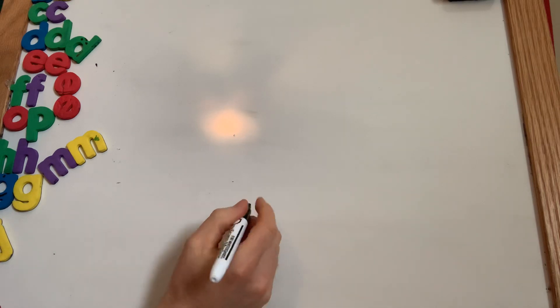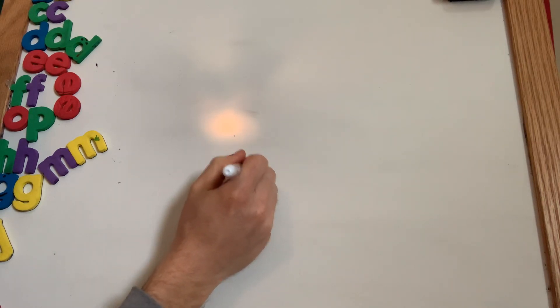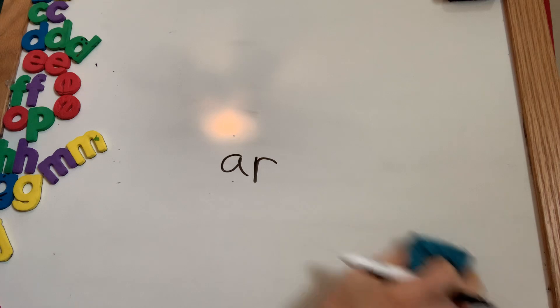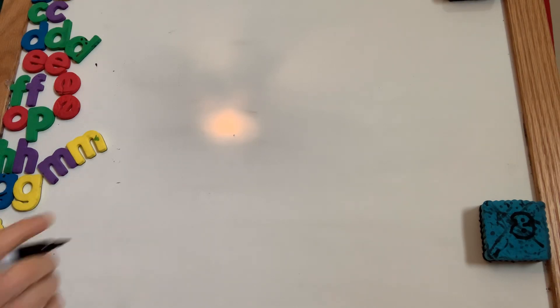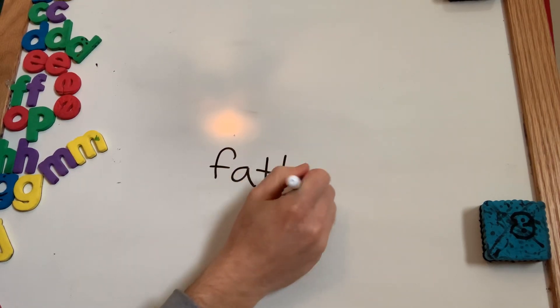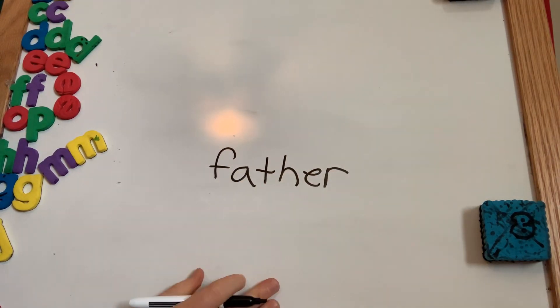Next one. Er. What's that R controlled vowel? I forgot to tell you to pause it. All right. Now here's a trick word. Father. I want you to pause it and try. Father. Think about what it looks like. Remember trick words. You can't use sounds. You just have to know it. Pause it and try. Father.